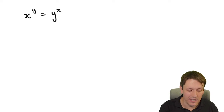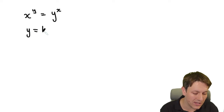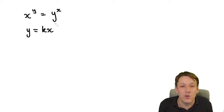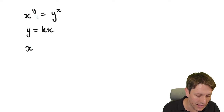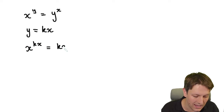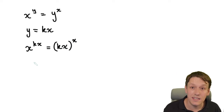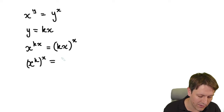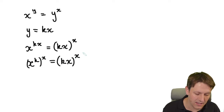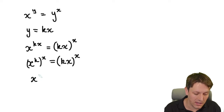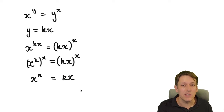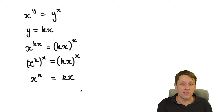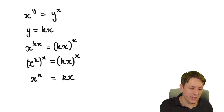To make this easier, we'll use the substitution y equals k times x. For any pair of values that works, y must be some number times x, so nothing is lost. Substituting into the equation gives x to the k times x equals k times x to the power of x. Since x to the kx is x to the k, all to the power of x, raising both sides to 1 over x gives x to the k equals k times x.